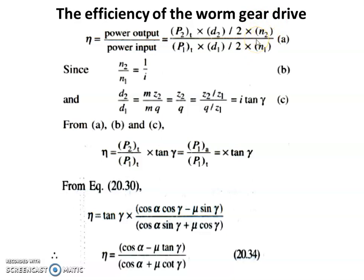After cancelling common terms from 2πN·Mt / (60 × 10⁶), the remaining terms are Mt and N. The torque Mt equals the tangential component of force multiplied by the radius. So Mt for the worm wheel is P2t × d2/2, and Mt for the worm is P1t × d1/2. The efficiency is then the ratio of power output to power input.